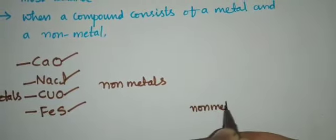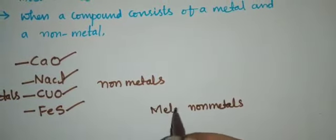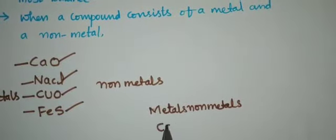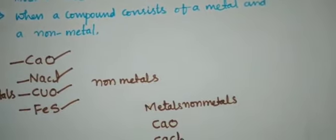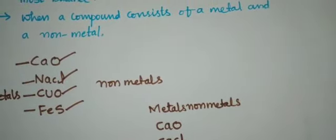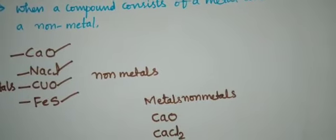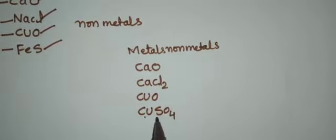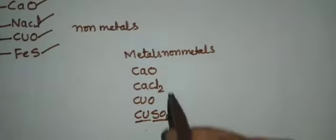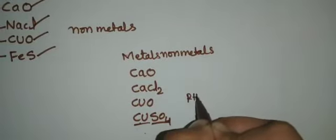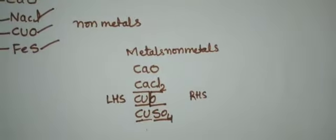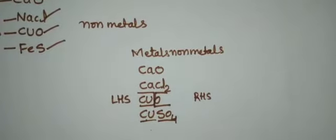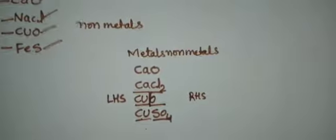For example, calcium is the metal and oxygen is the non-metal; copper is the metal and sulfide is the non-metal — CuS. While writing a chemical formula, you write the metal first on the left-hand side and the non-metal on the right-hand side. Sodium, iron, and copper are metals and are always written on the left side.